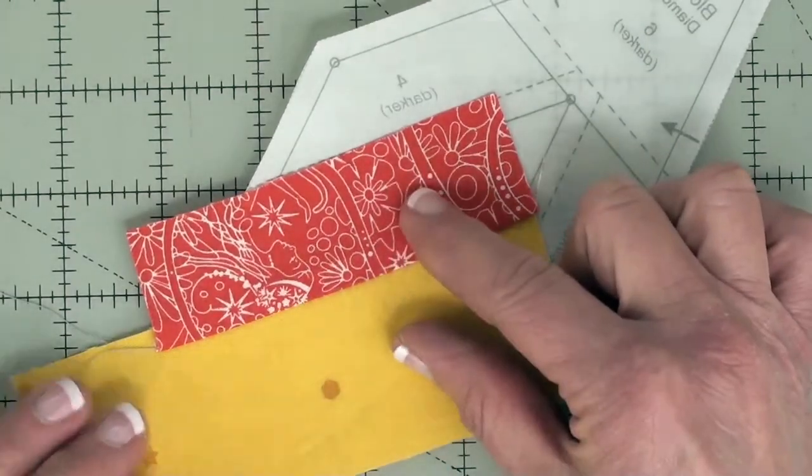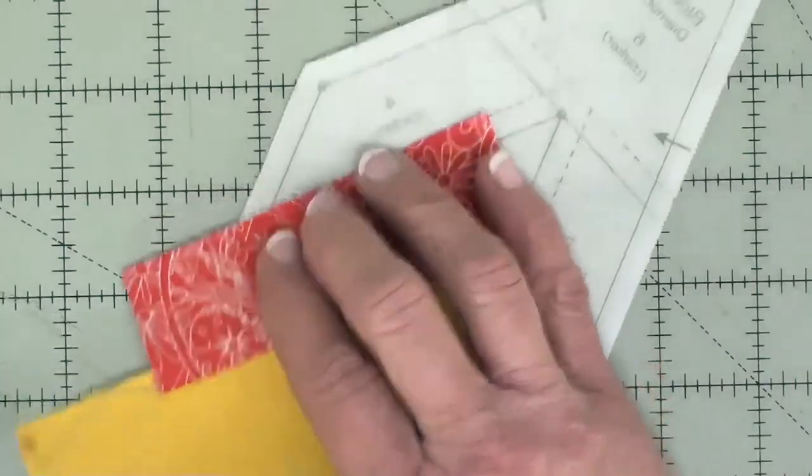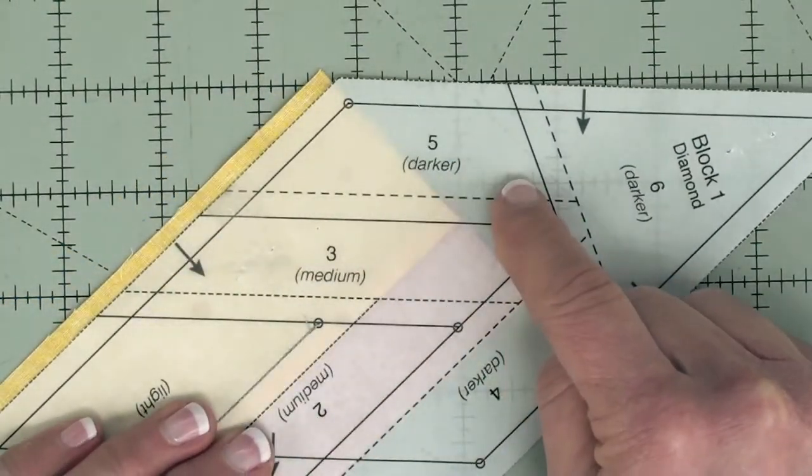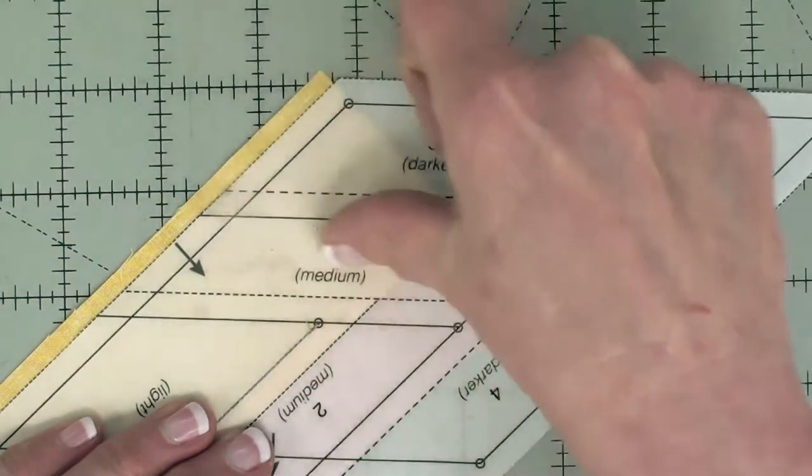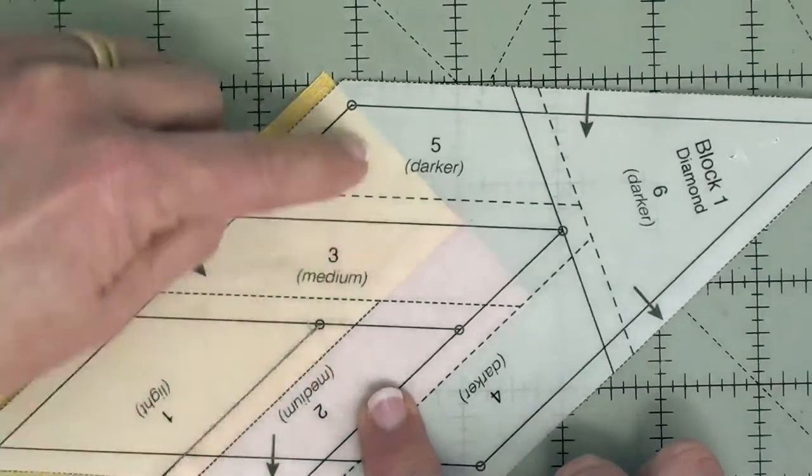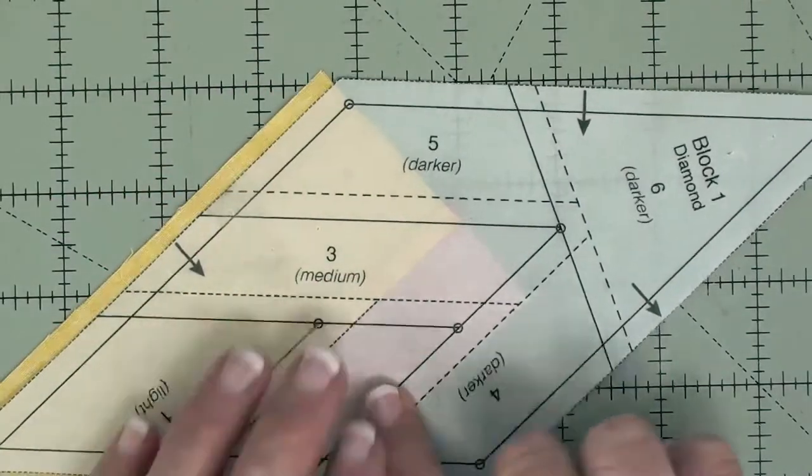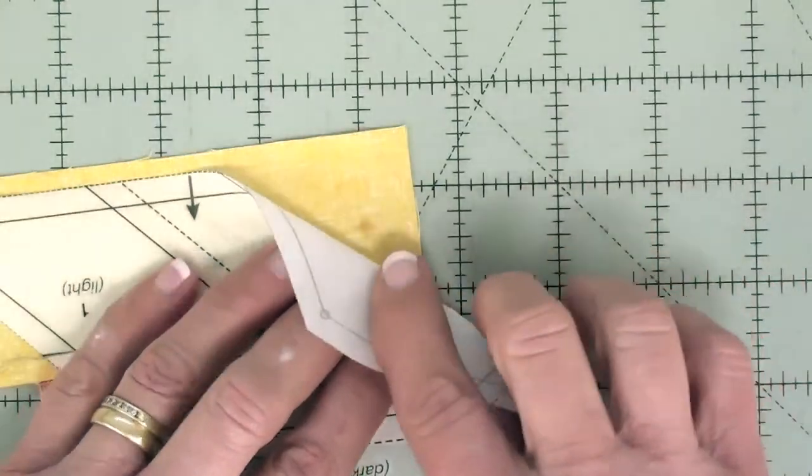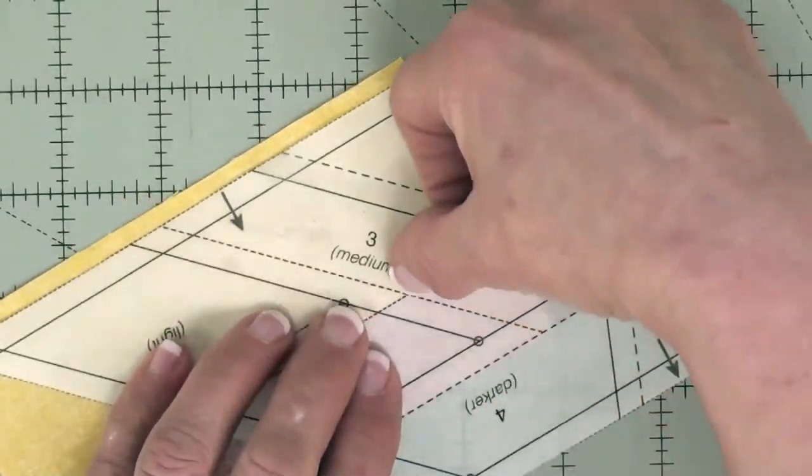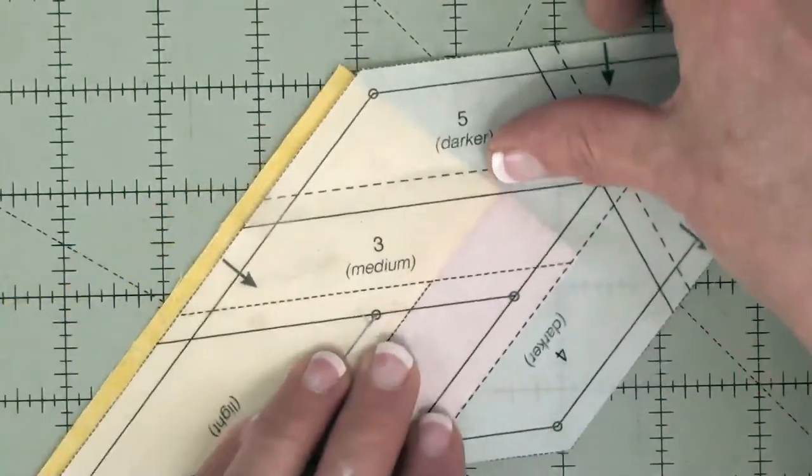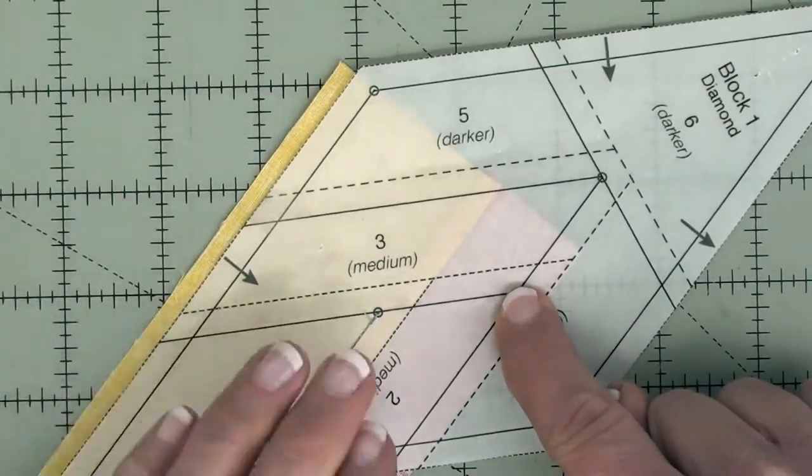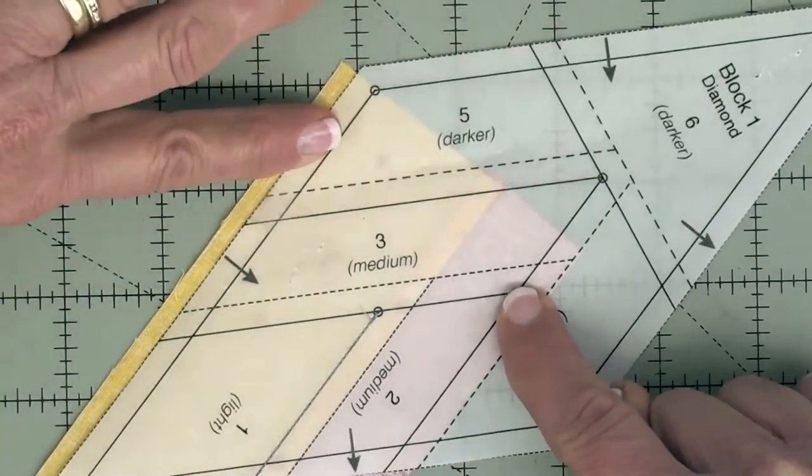Once one and two are sewn to the paper and pressed open, you'll want to flip the paper over and trim away the excess fabric so that you can sew number three in place. Now with this one, it's real easy because the number two fabric goes out there so far. It's real easy to think that that's where you need to cut it off, but you'll notice that isn't. This is where number three gets added. This is the seam line that you'll sew the number three fabric to the shape and then it'll flip over and cover the number three space.